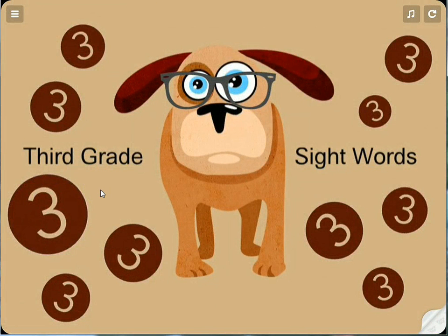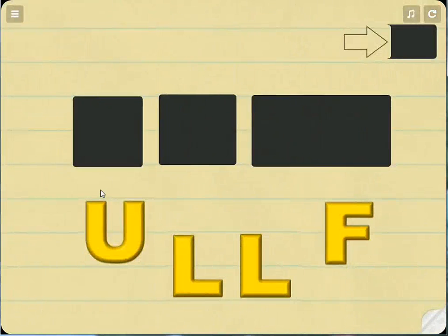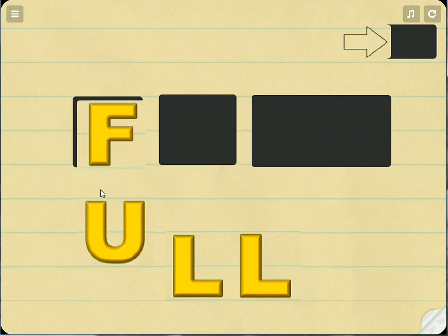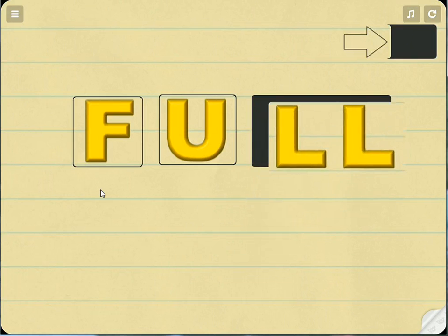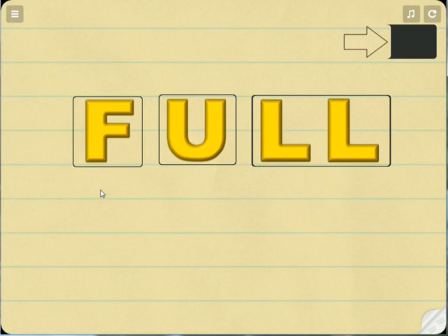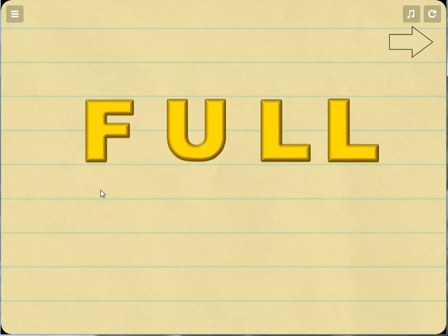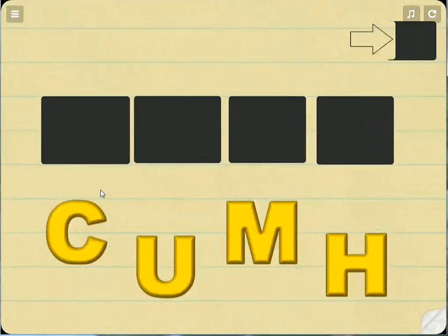Glad you came back to finish our third grade sight words part four. When you're ready to continue to the next page, slide the arrow into the black box. Your first word is FULL. Slide the letter FULL. Good job! The two L's are together because we actually only say that sound once. So now let's go ahead and take a look at our own version.